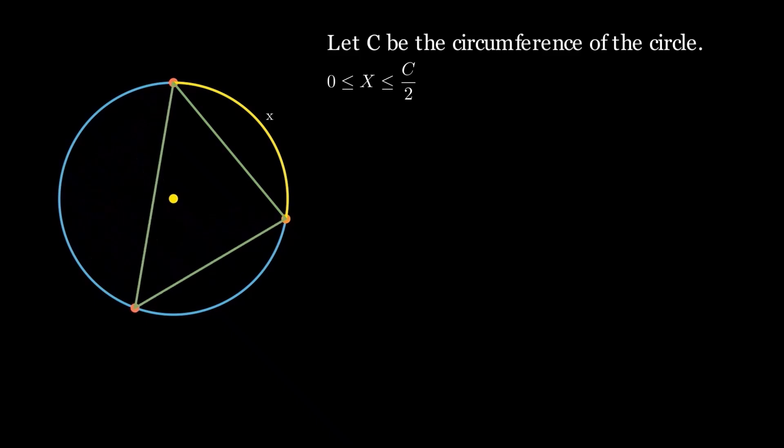For the center of the circle to be inside the triangle, the third point must lie on an arc of length X opposite to the center as shown. Therefore, if the distance between the first two points is X, the probability that the center lies inside the triangle is X over C.